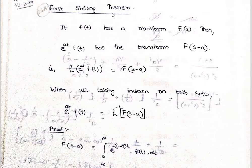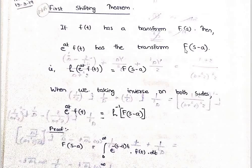First Shifting Theorem: If small f of t has a transform capital F of s, then e raised to at times f of t has the transform F of s minus a. That is, e raised to at times f of t has transform capital F of s minus a.